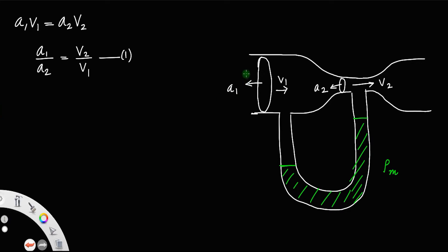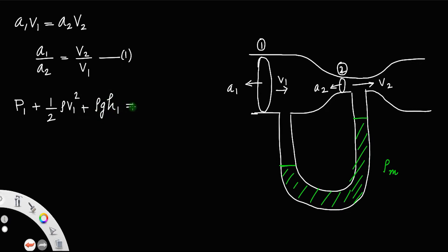Now, applying Bernoulli's theorem at section 1 and section 2, we have: pressure energy per unit volume P1 plus half·rho·V1² plus rho·g·H1 is equal to P2 plus half·rho·V2² plus rho·g·H2.